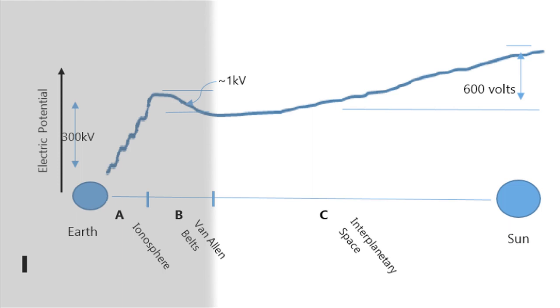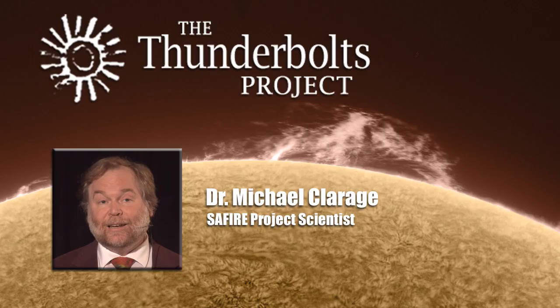There is data to support a 600-volt rise in potential from the Van Allen belts to the Sun. I've spoken about that at several conferences and I'll give you the references below. Putting everything together onto one graph like this is really breaking new ground. Astrophysicists are not talking about things this way — not yet, at least.